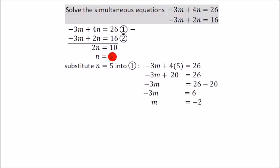Once you have one bit of the puzzle, i.e. n equals 5, then it's easy to solve the remaining bit, that is m. To work out m, I need to put my answer for n into equation 1 or 2, it doesn't matter which one.